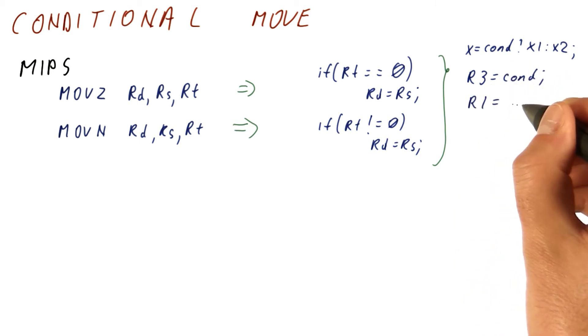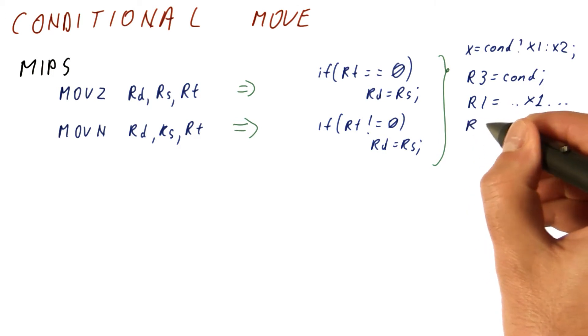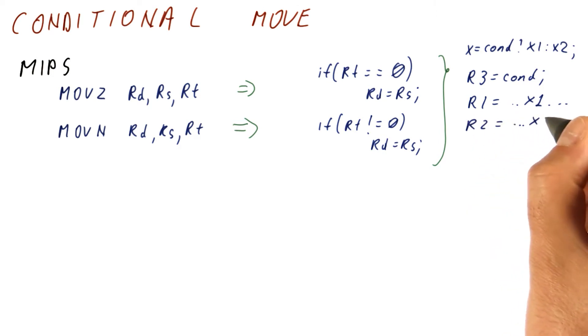Then R1 would be our x1 expression we wanted to implement. R2 would be our x2. And then we will do MOVE N, x, R1, R3.